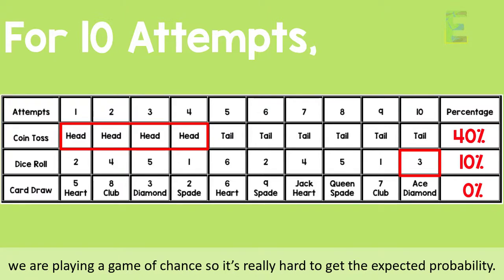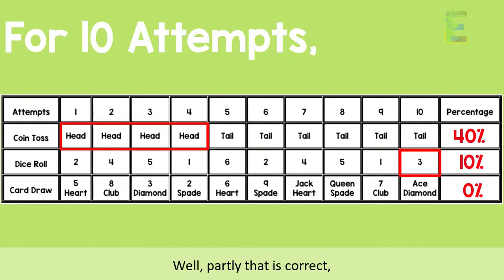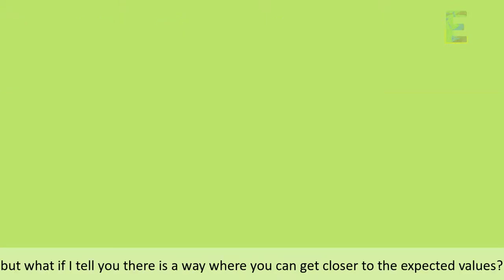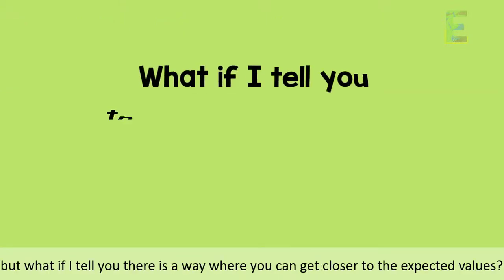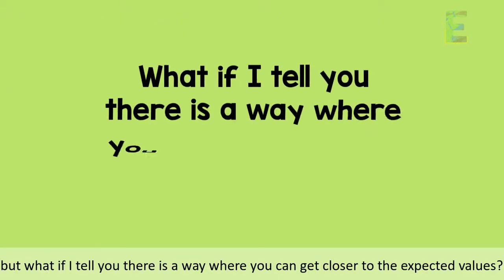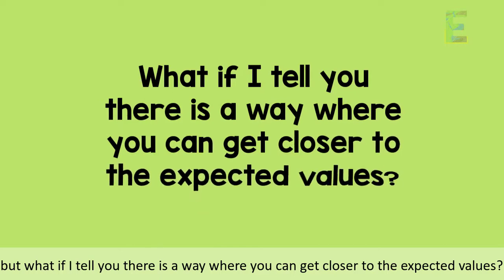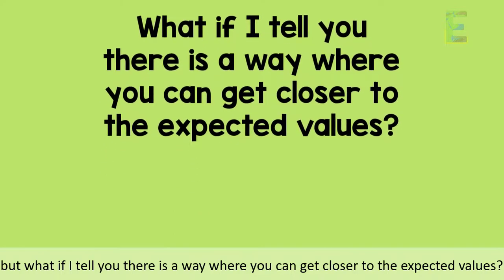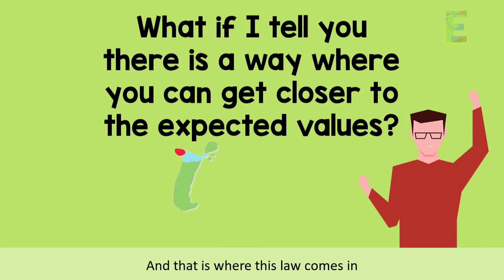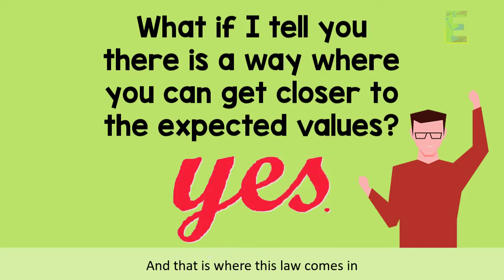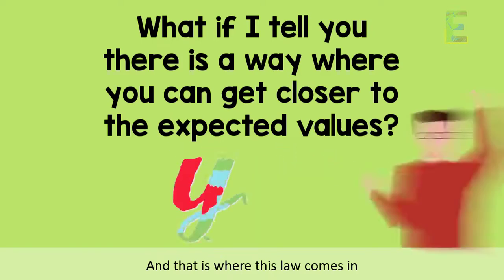Some of you might say, well, it is what it is — we are playing a game of chance, so it's really hard to get the expected probability. Well, partly that is correct. But what if I tell you there is a way where you can get closer to the expected values? Yes, there is, and that is where this law comes in.